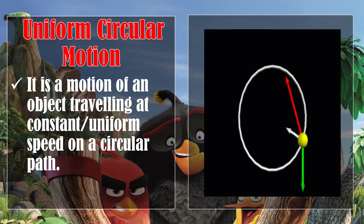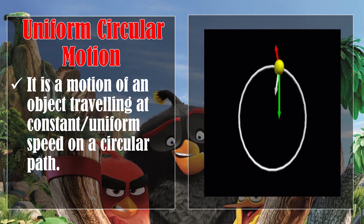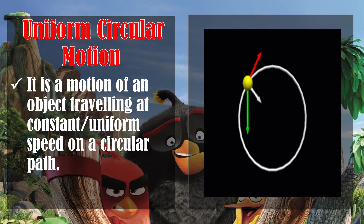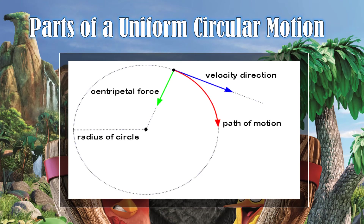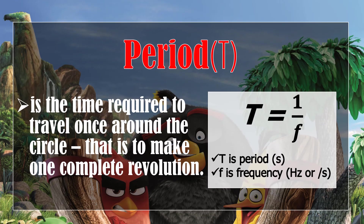Now let's proceed to uniform circular motion. Uniform circular motion is a motion of an object traveling at constant or uniform speed on a circular path. The parts of uniform circular motion include: centripetal force, radius of circle, path of motion, and velocity direction. The period in uniform circular motion is the time required to travel once around the circle — that is, to make one complete revolution.